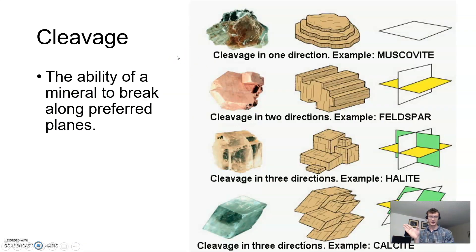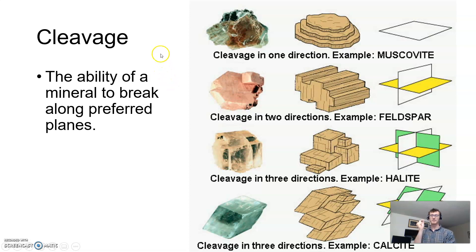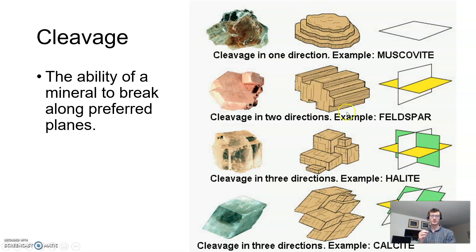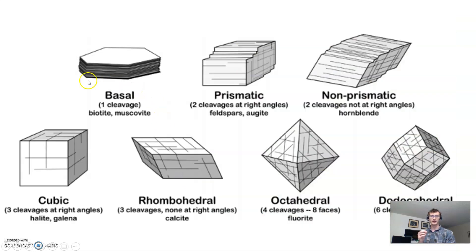We can also talk about cleavage — the ability of a mineral to break along preferred planes. This is not related to the shape that the mineral has as it forms, but the shape that it takes whenever it breaks. Does it break randomly, like glass shattering? Or when it breaks, does it break along straight lines or form 90-degree angles? You can have something which flakes off and comes off in sheets, something which has a couple of directions it'll break at making angles, or breaking off into little cubes forming 90-degree angles or even rhombuses.